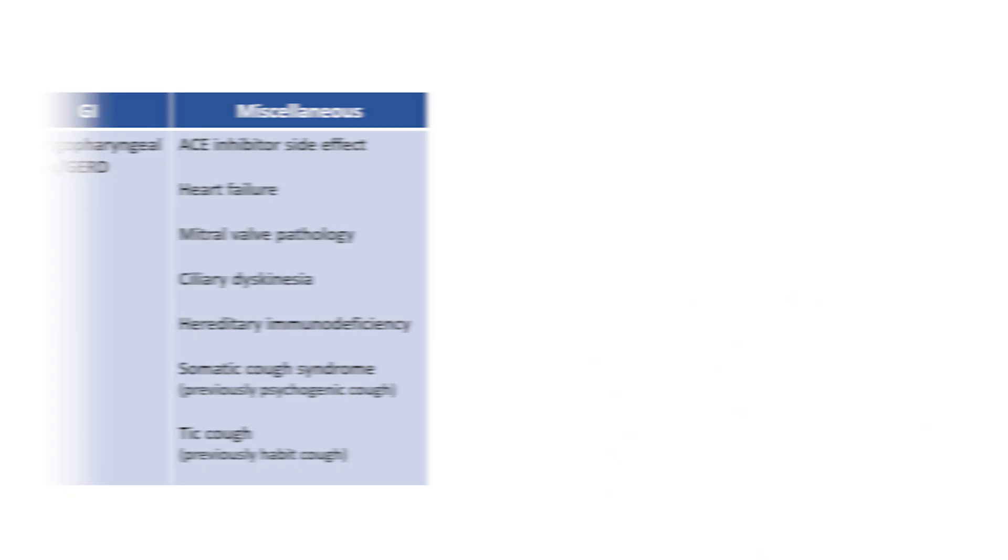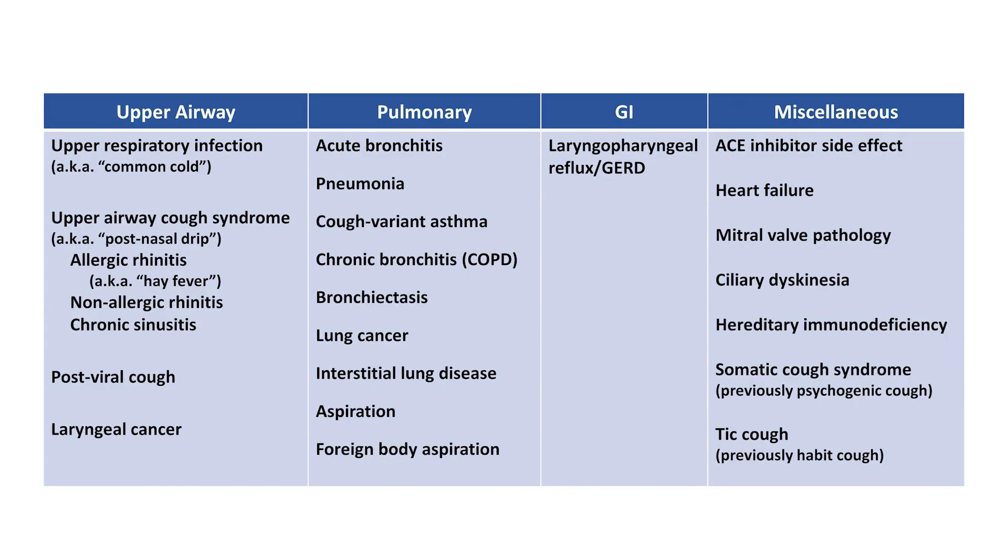When considering these many etiologies, of course, not all are equally common, and most preferentially cause either an acute or a chronic presentation. The most common causes of an acute cough include an upper respiratory tract infection, post-viral cough, acute bronchitis, and pneumonia.